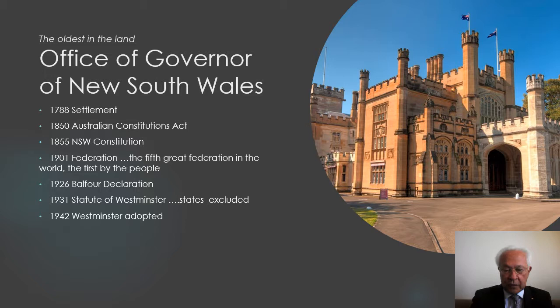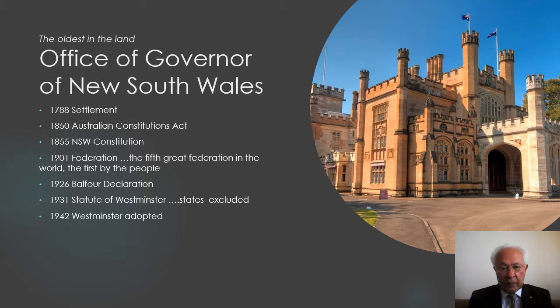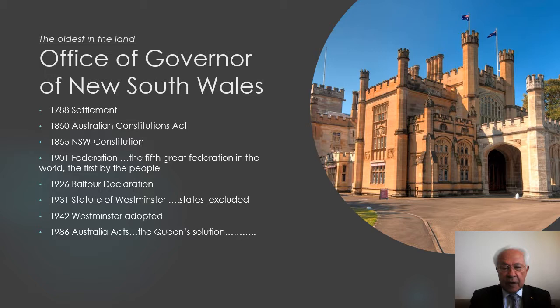The Queen herself offered the solution, which seemed to have escaped all of the politicians. She said that unlike any other part of the Commonwealth, she was prepared to be advised not only by the Prime Minister of Australia, but also by all of the Premiers in relation to state matters. This was enacted in legislation in 1986, called the Australia Acts — acts because they are acts of the British, Australian, and state parliaments.